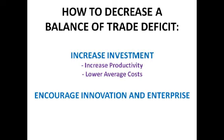If we also increase innovation and enterprise, this helps to reduce our balance of trade deficit, because it might lead to us producing more exciting goods and services which sell better on the international market. If we do more research into what people in other countries want, maybe we'll be able to meet their needs better and they'll buy our goods and services. There are many different ways to decrease the balance of trade deficit, and in later videos we'll look at how policies are used to try to reduce it.